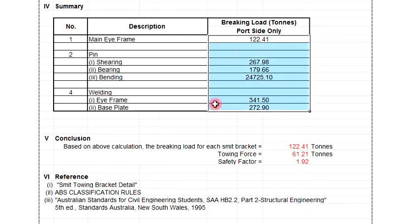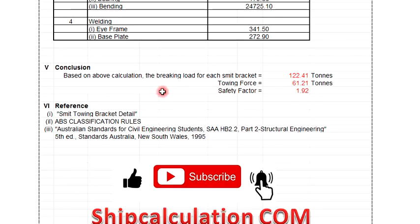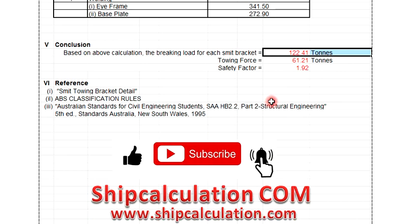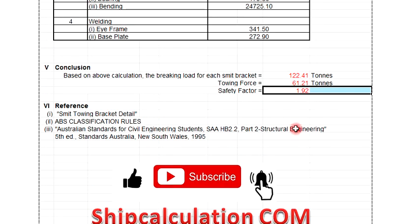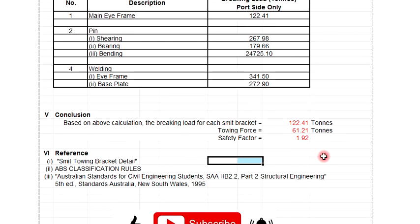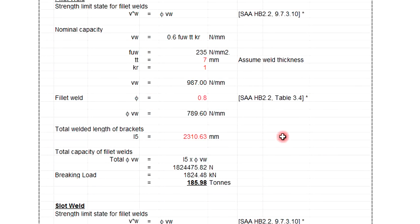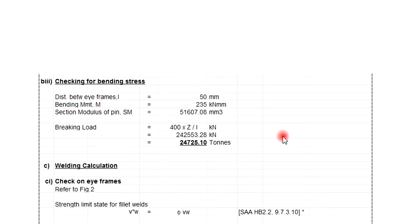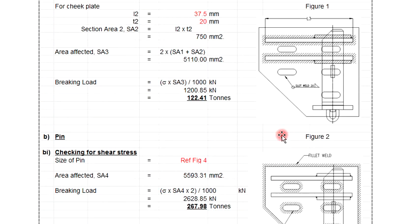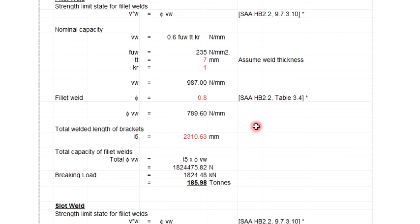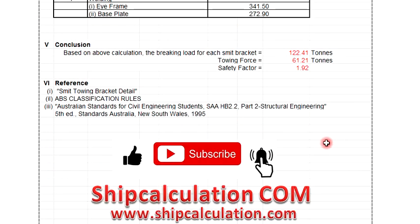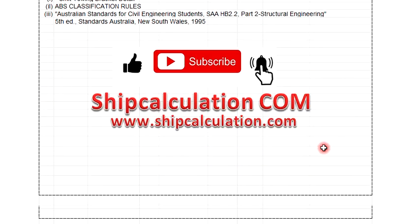In the summary, the main eye frame breaking load is around 122 tons. The safety factor here is 1.92. You can check against the ABS classification rules, DNV classification, or any other classification such as BKI or NKK to double-check everything. This is just a guidance to expedite your calculation. You can also check the Australian standard for civil engineering reference.